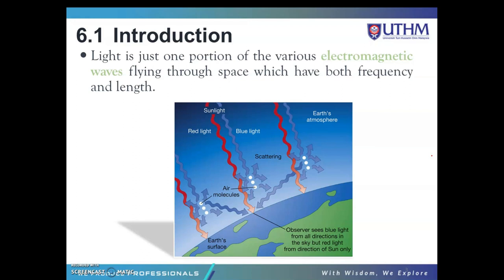Light is just one portion of the various electromagnetic waves flying through space, which have both frequency and wavelength. Light travels from the sun to the surface of the earth. The light from the sun looks white, but it is really made up of all colors of the rainbow: red, orange, yellow, green, blue, and violet. Sunlight reaches earth's atmosphere and is scattered in all directions by gases and particles in the air. Blue light is scattered more than other colors because it travels as shorter, smaller waves — that is why we see a blue sky most of the time.